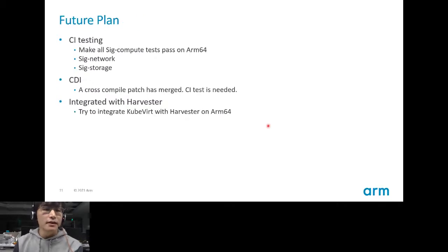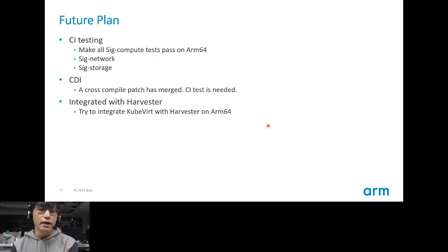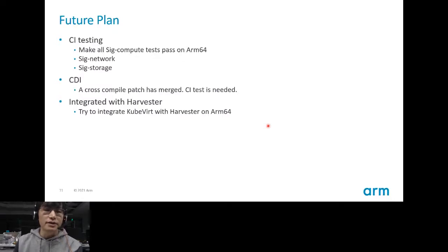Our future plans: we plan to enable more tests, like making all SIG compute tests pass on ARM64, and also include SIG network and SIG storage. We also want to enable CDI on ARM — our cross-compile patch has already merged in that project, but CI testing is still needed. We also want to try to integrate KubeVirt with Harvester on ARM64.